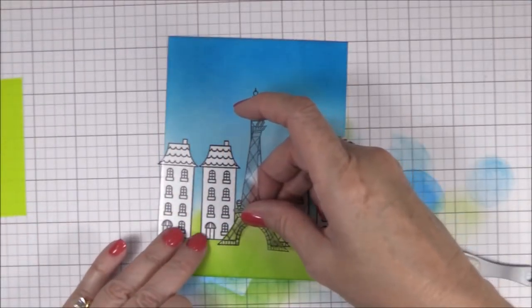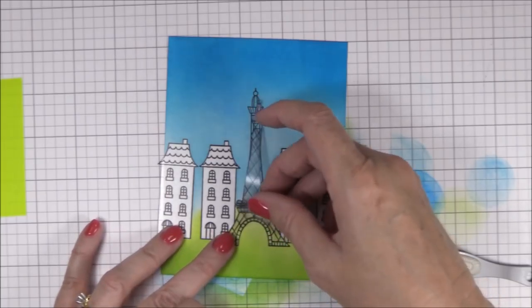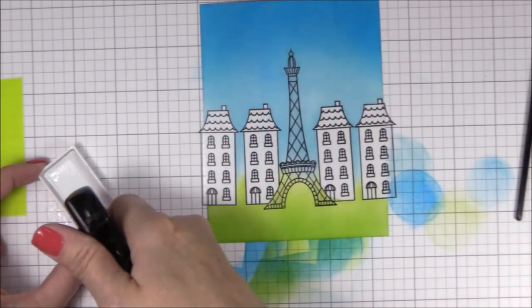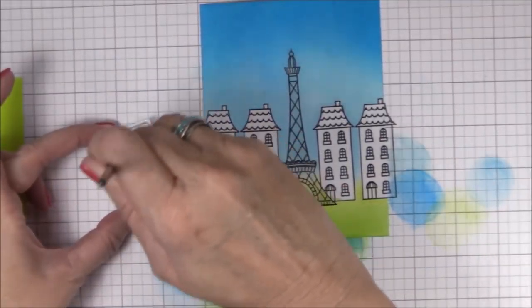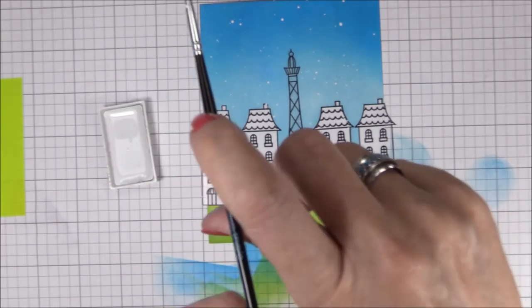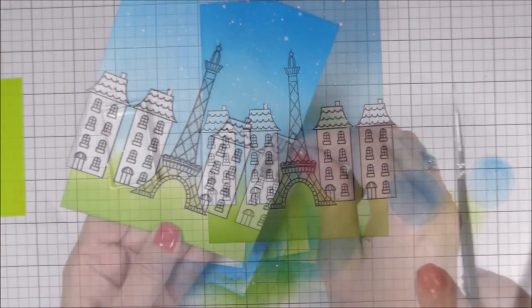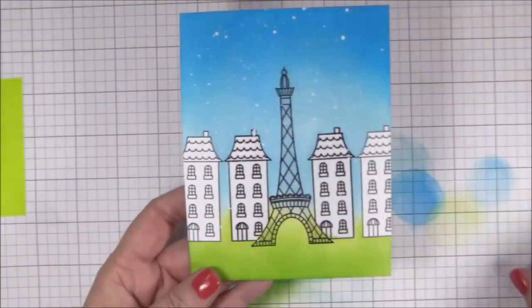I want to add some splatters of white watercolor to my sky for stars, so I'm replacing the Eiffel Tower mask to protect that area. I've added some water to my white watercolor pot, and I'll stir it up until the consistency is smooth but still pretty opaque. I load a pretty small watercolor brush up with the white pigment and tap on the brush to add light splatters. And then I carefully remove all of the masks.